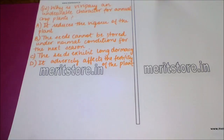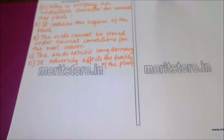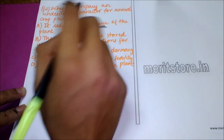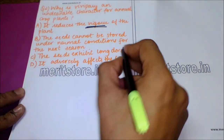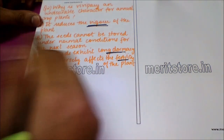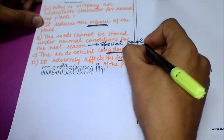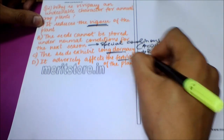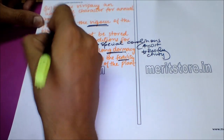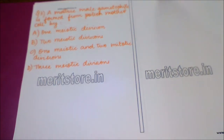The next question is: why is vivipary an undesirable character for annual crop plants? Option A: it reduces the vigor of the plant. Option B: the seeds cannot be stored under normal conditions for the next season. Option C: the seeds exhibit long dormancy. Option D: it adversely affects the fertility of the plant. The vigor of the plant is not largely affected, seeds do not exhibit long dormancy, and fertility stays unaffected. The problem with vivipary is that seeds cannot be stored under normal conditions for the next season, requiring special conditions that increase cost and reduce productivity, making vivipary undesirable.